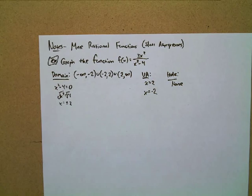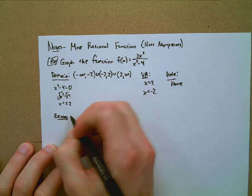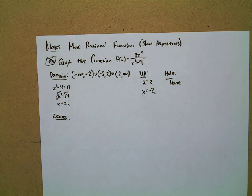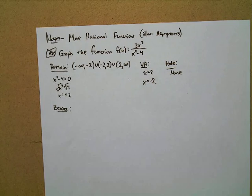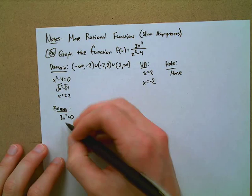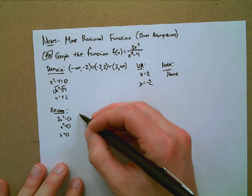How about zeros? Emily K., what do you say? To find zeros, we set the numerator equal to zero. We set 3x² equal to zero, divide both sides by three — still zero — then square root both sides, giving us zero. So the zero of this function is at the point (0, 0).